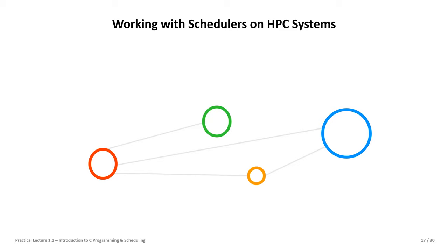Welcome back to high-performance computing. This is part two of our practical lecture 1.1, about introduction to C programming, scheduling, and understanding batch processing. In the first part, we looked at the key ingredients of a C program — a simple Hello World — and prepared the environment for using OpenMPI, which we'll use on HPC systems in the next couple of lectures. This lecture is a short introduction to C programming and scheduling.